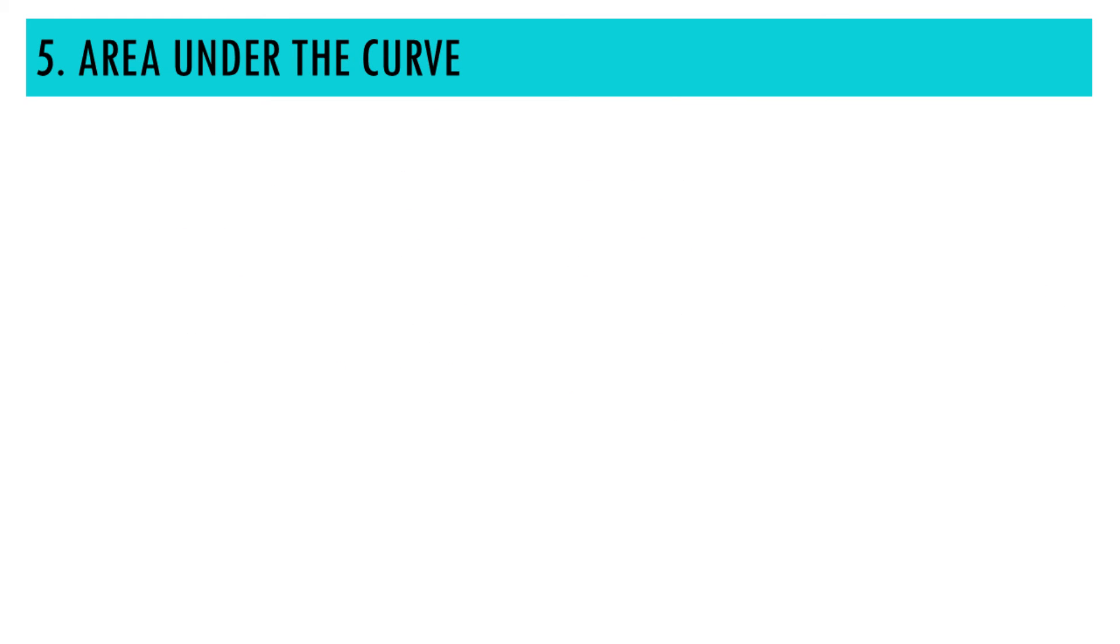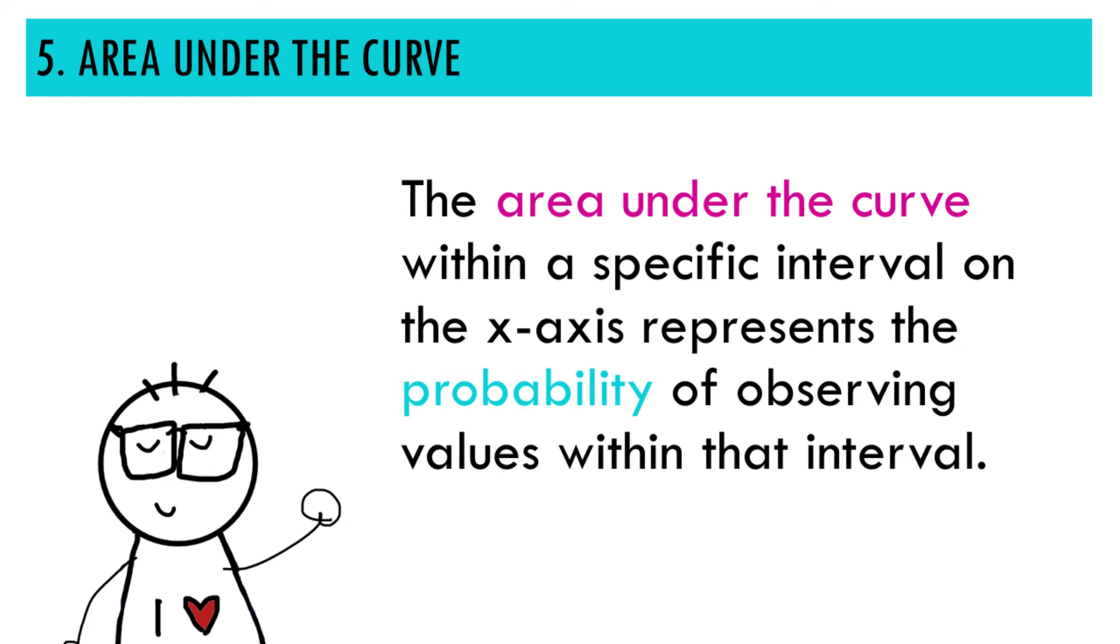Number five, this is a bit less intuitive, but the area under the curve within a specific interval of the x-axis represents the probability of observing values within that interval. Let's give an example.